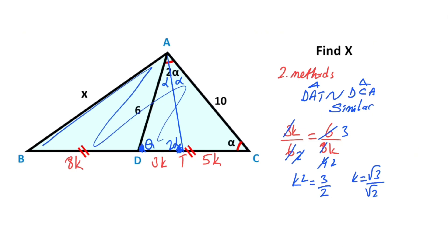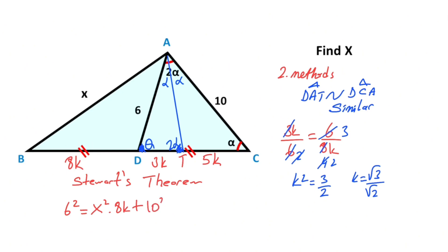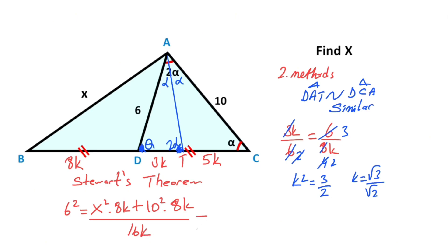Now if you focus on triangle ABC, for this triangle we can apply Stewart's theorem. According to Stewart's theorem: 6 squared must equal x squared times 8k, plus 10 squared times 8k over 16k, minus the product of these two parts: 64k squared. You know that k squared equals 3/2, so substituting gives 96.